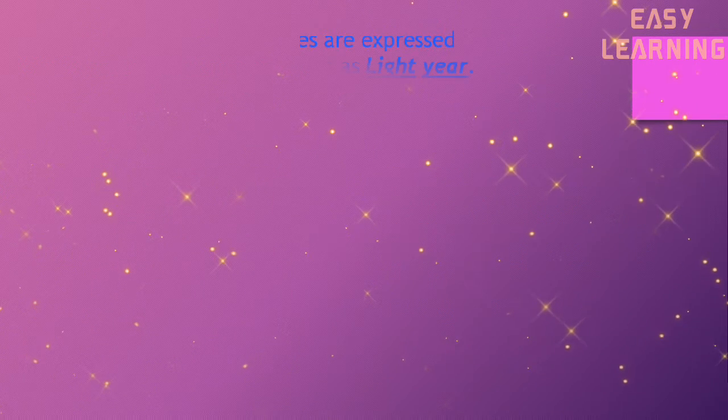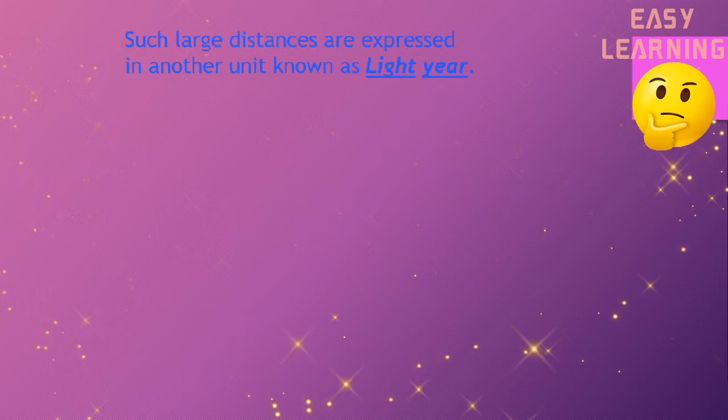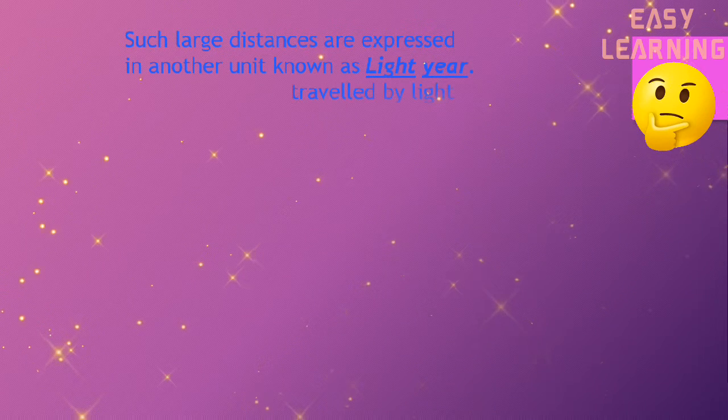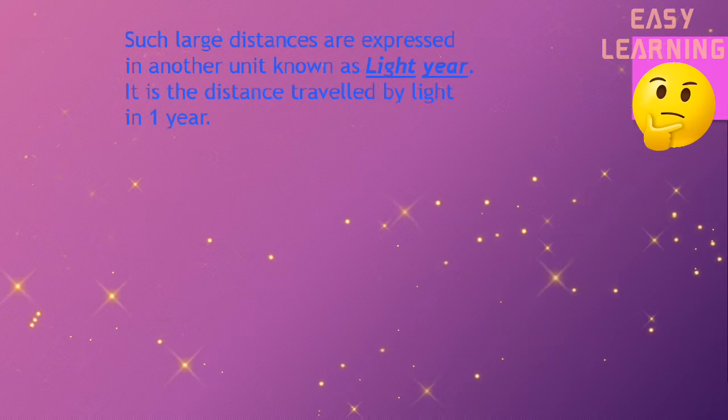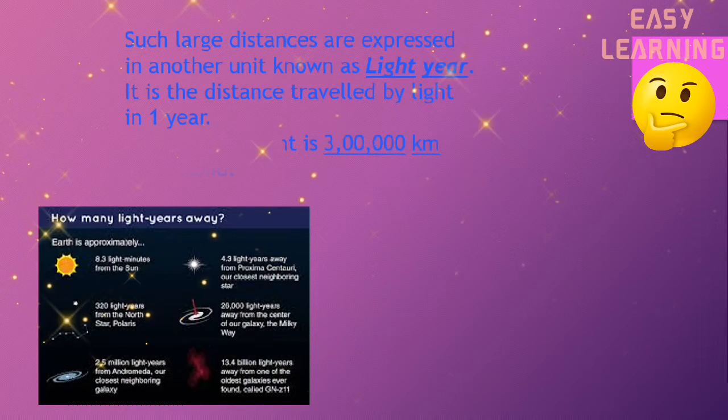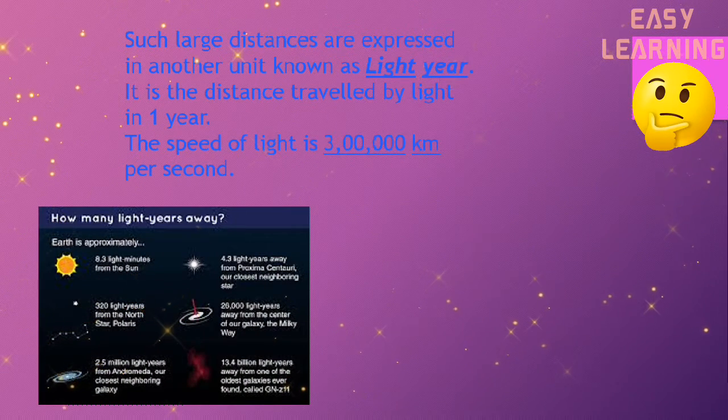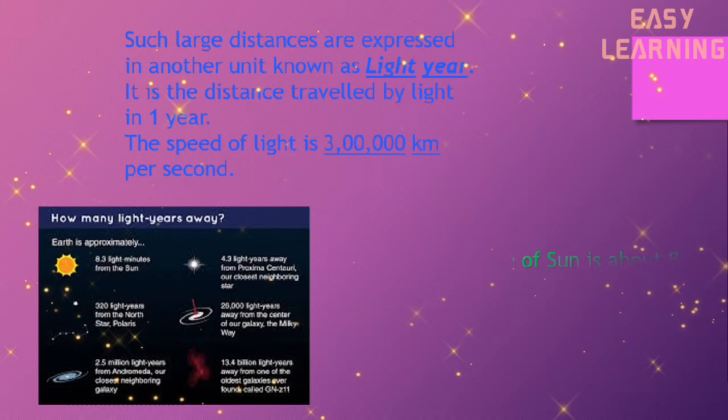Such large distances are expressed in another unit known as light year. It is the distance traveled by light in one year. The speed of light is 30,000 kilometers per second.